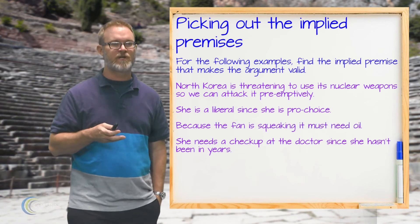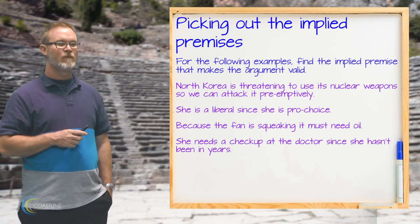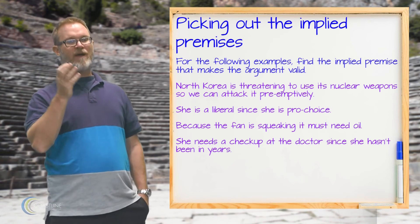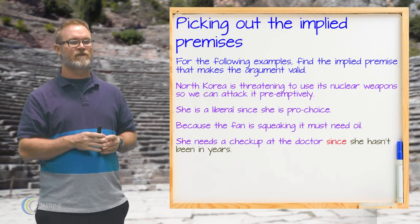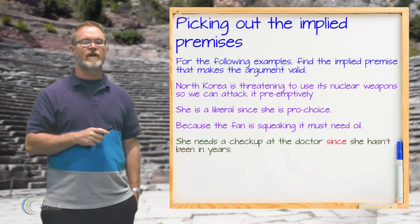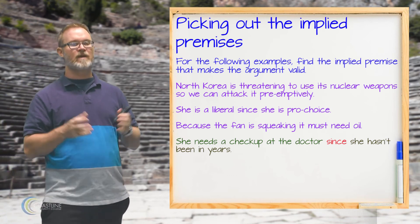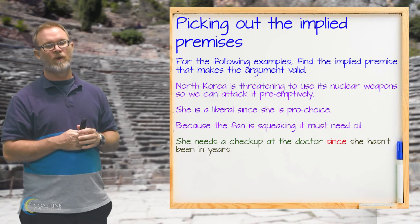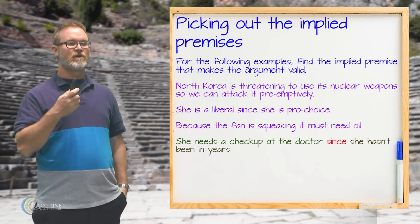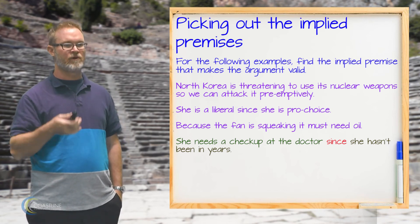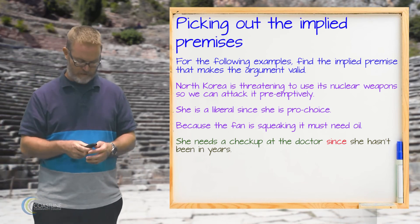Last in this set: she needs a checkup at the doctor since she hasn't been in years. The 'since' indicator tells us she hasn't been to the doctor in years is the reason, and she needs a checkup is the conclusion. To make that argument valid, the implied premise would be something like: if you haven't been to the doctor in years, you necessarily need a checkup.